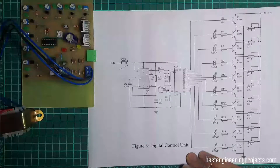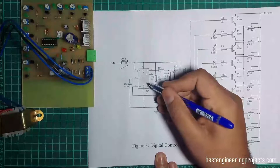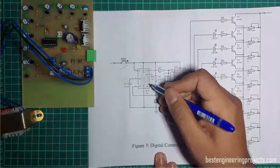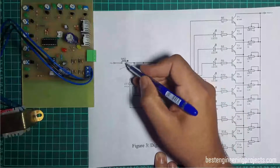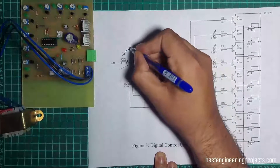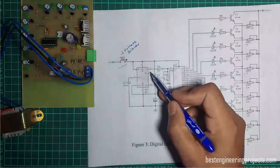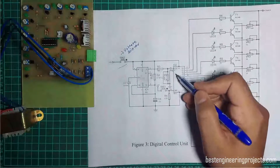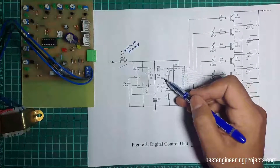Now let's see the digital control unit. Timer IC 555, that is IC1, is wired as an astable multivibrator and generates a clock pulse. IC1 generates the clock pulse when switch SW2 is pressed. SW2 is also referred to as the voltage selector. The output of IC1 from pin 3 is given to the clock pin, that is pin 14 of IC2, through an RC network built using resistors R3, R5 and capacitor C8.